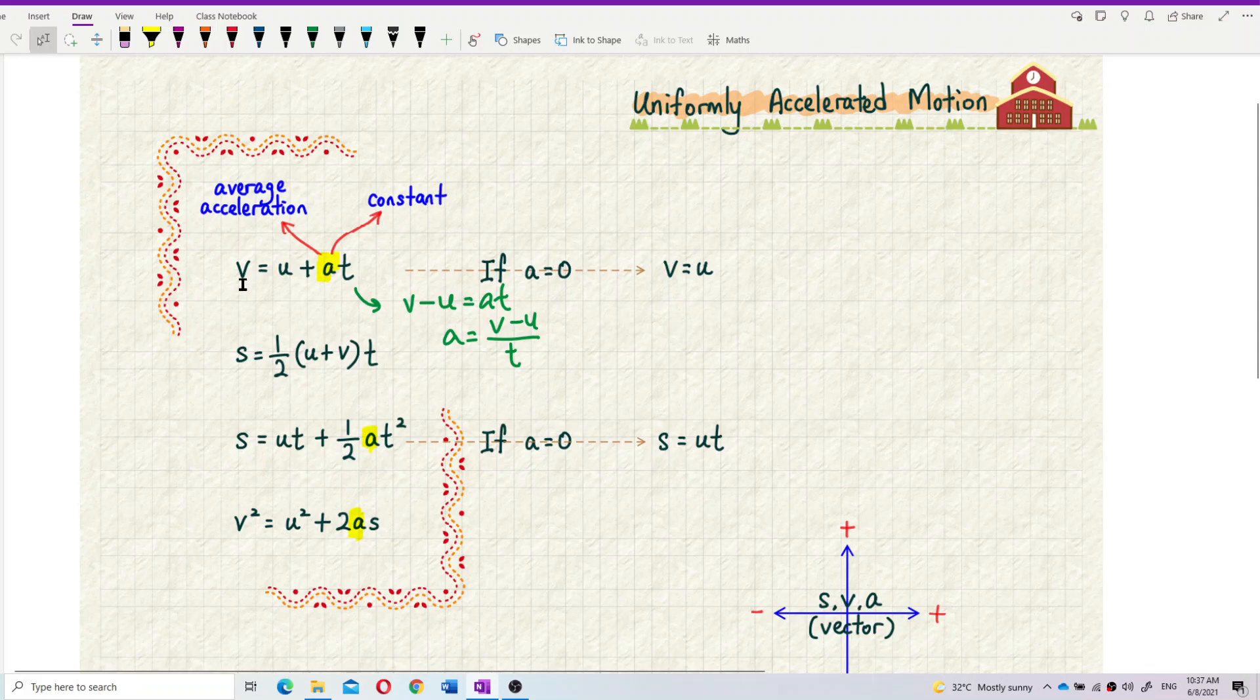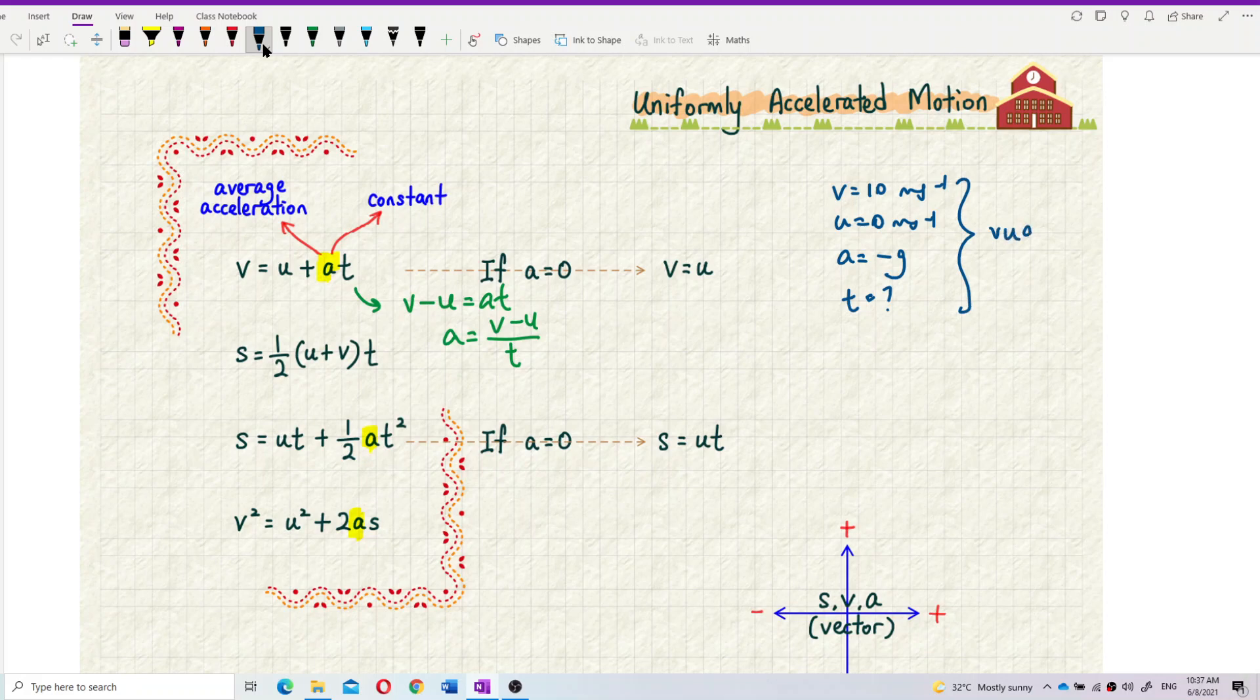How to use this formula? Normally, the question will give you three known values and then find one unknown. For example, let's say the question gives you V equal to 10 meter per second, and then U is equal to 0 meter per second, and then acceleration is, let's say, negative G. So, find the time taken. So what you do? This is, you use the formula, buat.